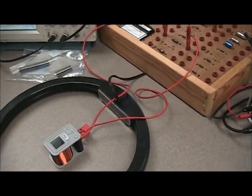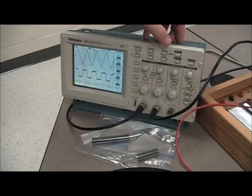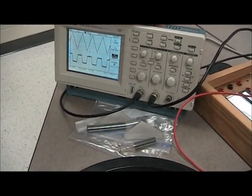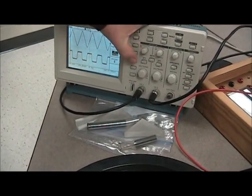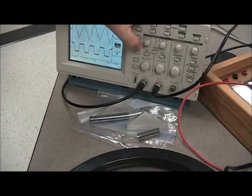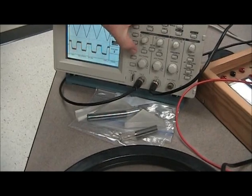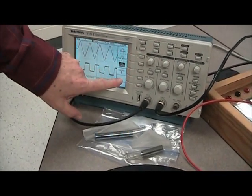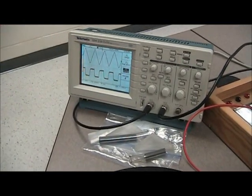We also clean it up by putting on here, going to here and setting it to average. So it averages over, in this case, four sweeps to clean up the signal a little bit more.